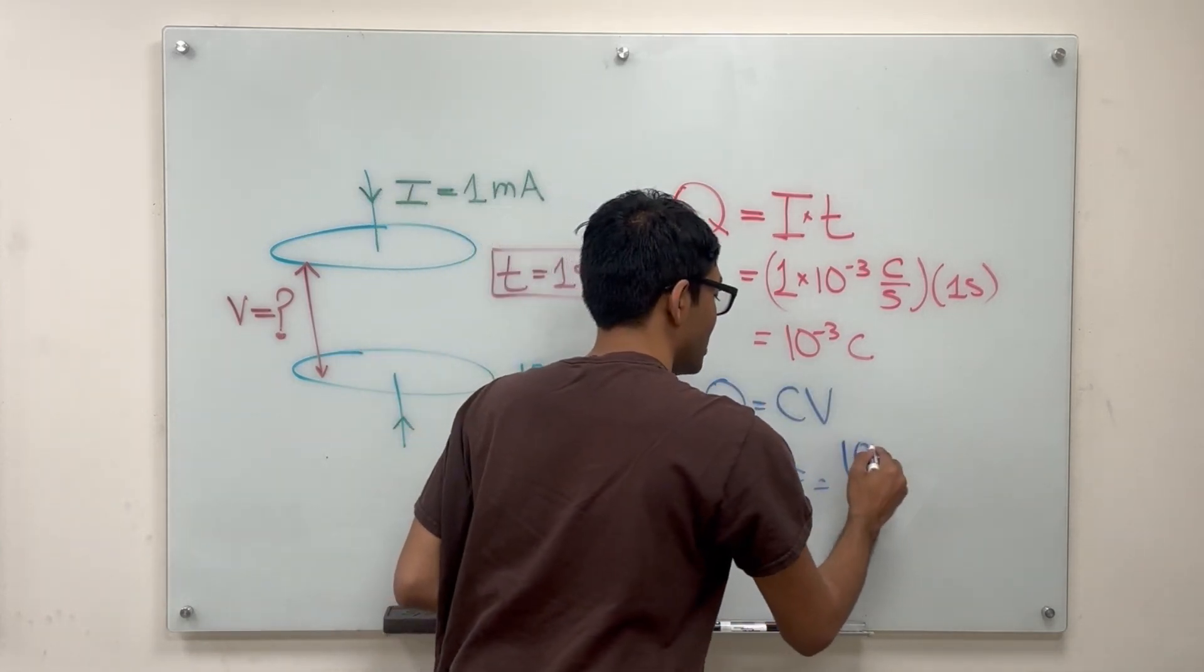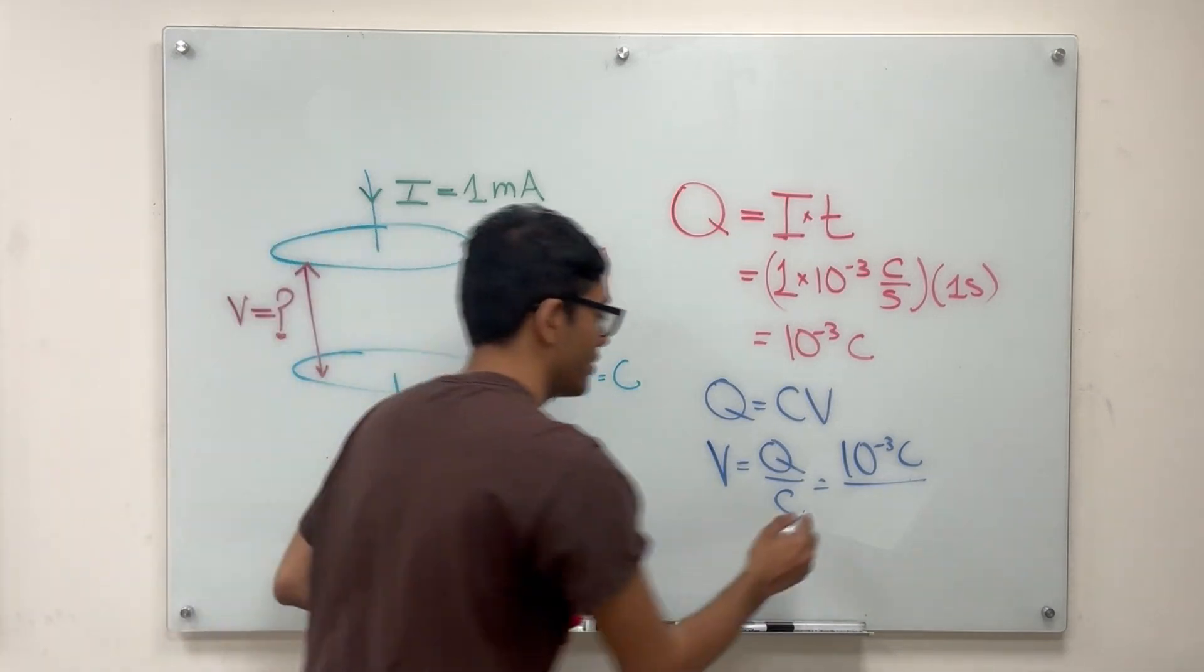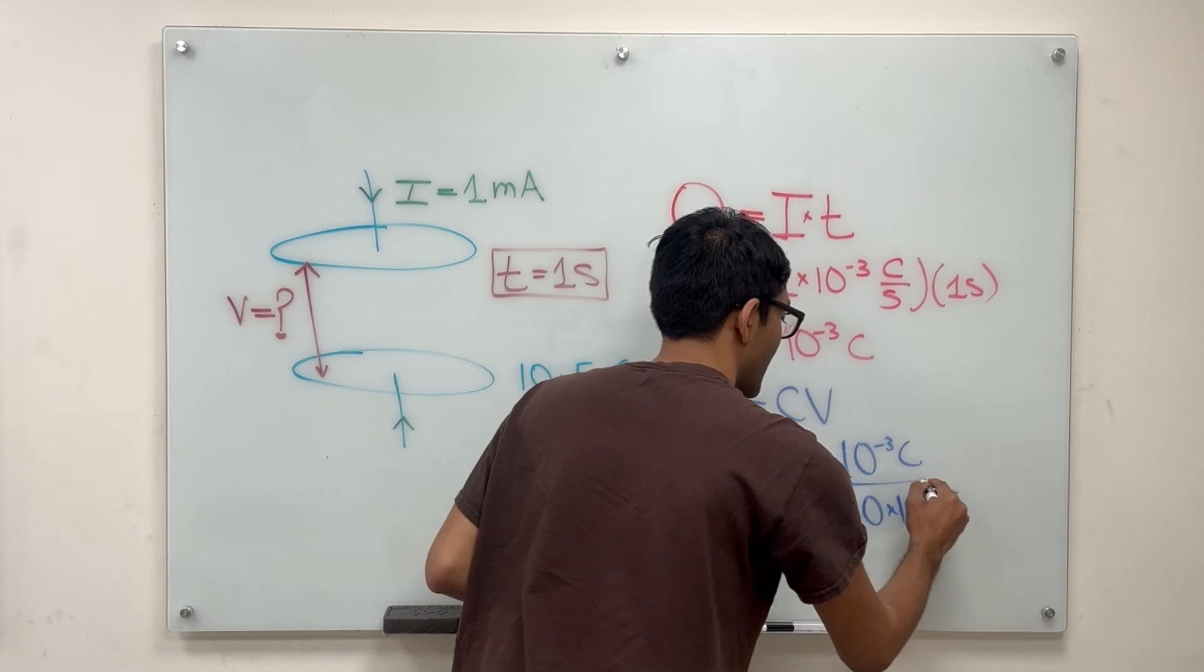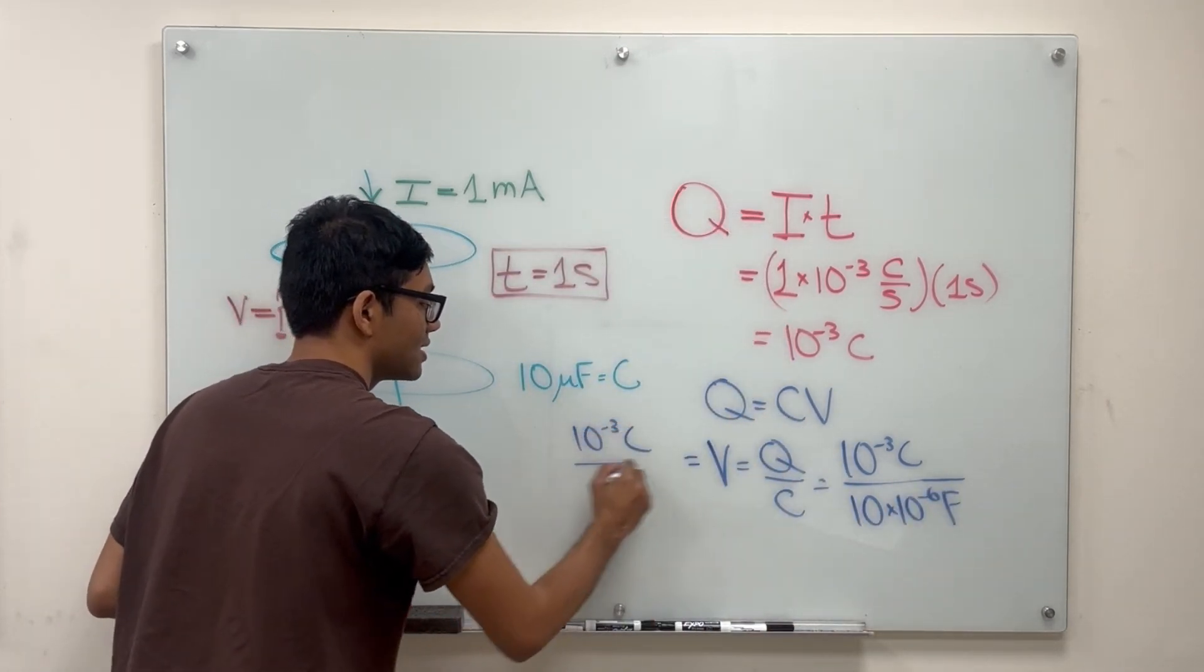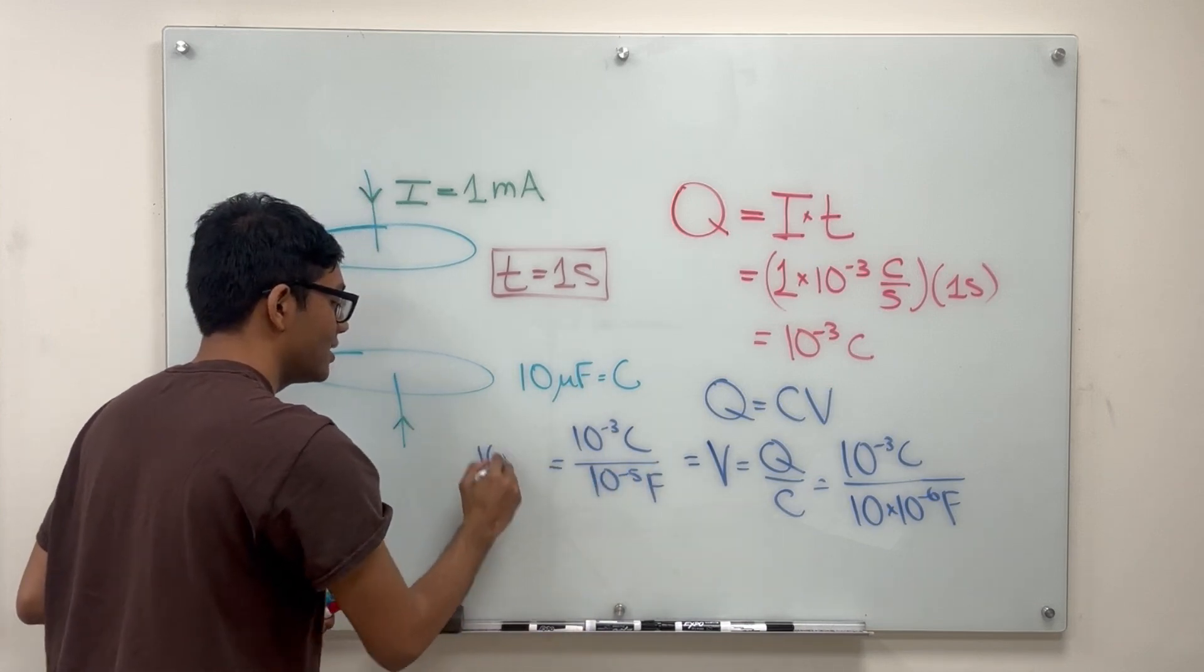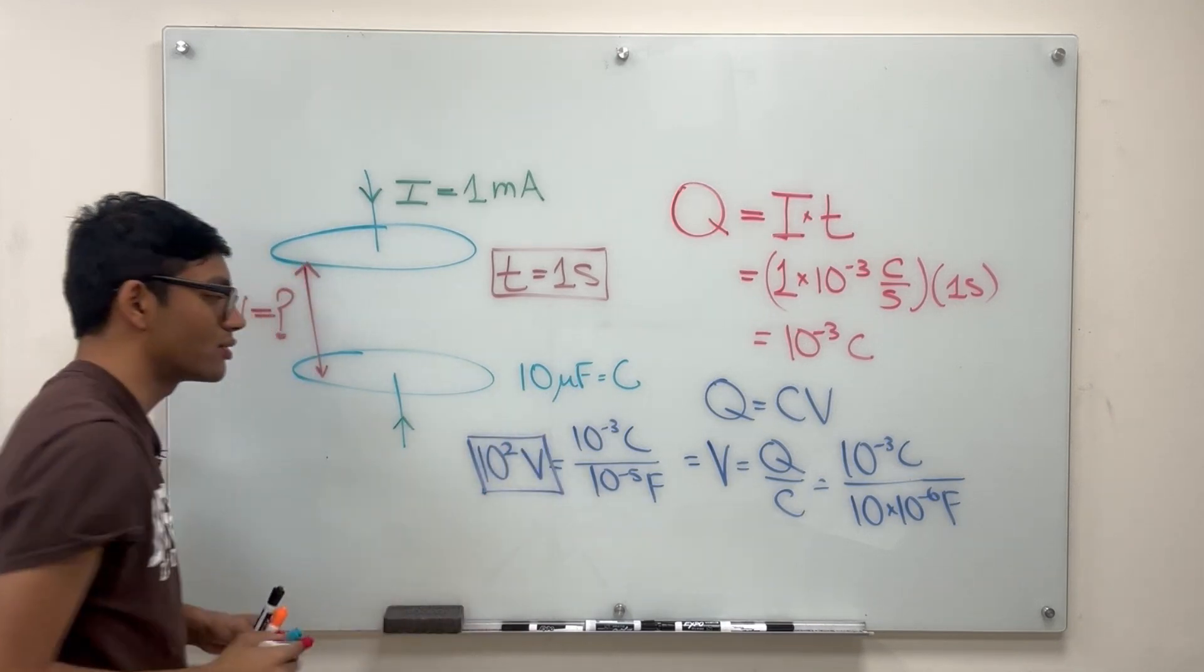q in this case is 10 to the minus 3 coulombs and c the capacitance is 10 microfarads which is 10 times 10 to the minus 6 farads. So if I just simplify this I've got 10 to the minus 3 coulombs divided by 10 to the minus 5 farads, that gives me 10 squared for my potential difference or 100 volts.